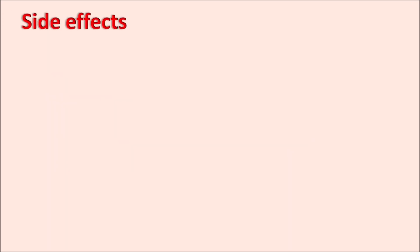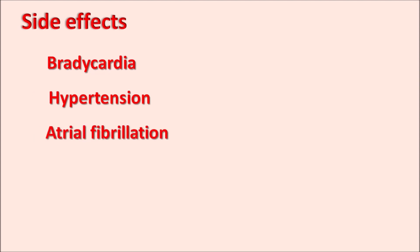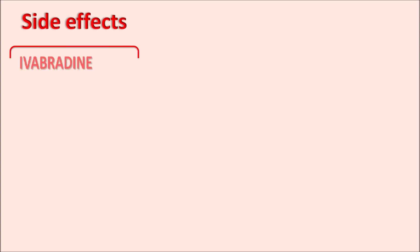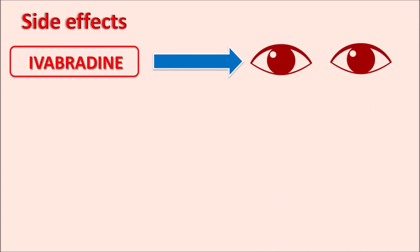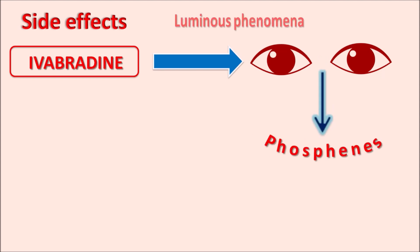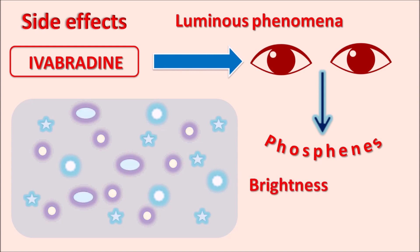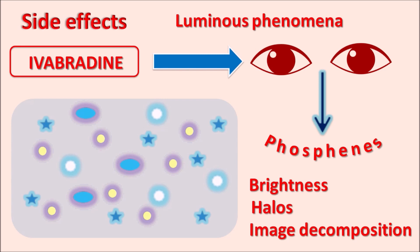The important side effects of Ivabradine include bradycardia, increased blood pressure resulting in hypertension, and atrial fibrillation. Other side effects include angioedema, erythema, vertigo, urticaria, skin rashes, and pruritus. An important side effect is on the visual system — this drug can produce phosphenes. This is a luminous phenomenon caused by blockade of hyperpolarization-activated ion channels within the eye, producing increased brightness in the visual field and halos. This side effect is reversible when the drug is stopped.